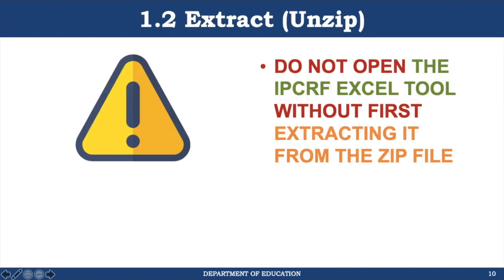Simply right-click on the file and click download. When you have downloaded the zip file, you must then extract the Excel file from inside it. It is important — and I recommend you emphasize this when you cascade to the field — that you should not open the IPCRF Excel tool without first extracting it. In the past, some users complained that they cannot edit or save the Excel tool, or that data they encoded is lost after saving and closing Excel. That was probably due to this missed step.